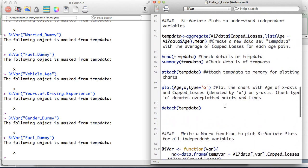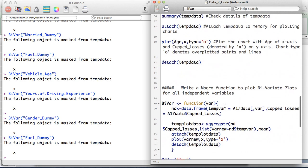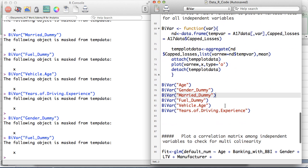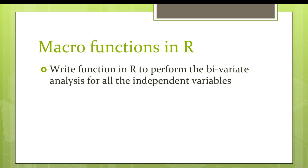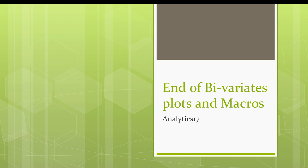That's how you write a macro function in R to quickly compute bivariate plots for all variables. That's the end of this section on bivariate plots and macros. In the next section we'll run correlation and regression — the final section of the course — using the LM function to run the regression equation.